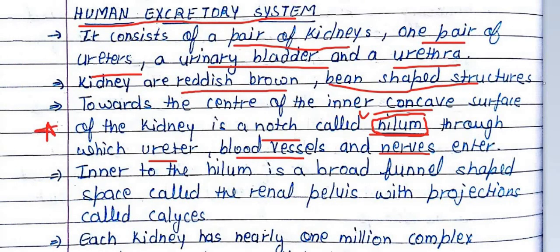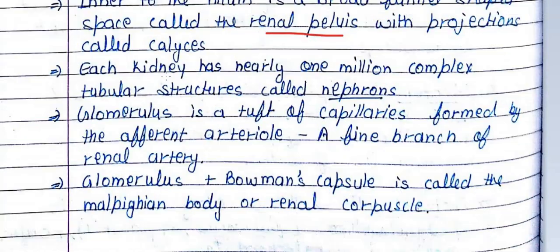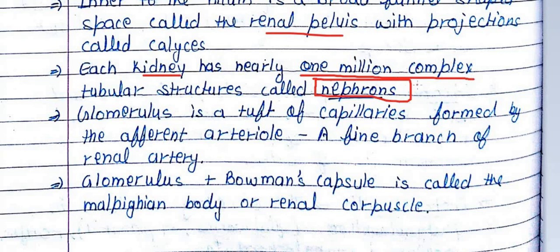The hilum is a very important structure — remember this for exams: after which surface is the hilum found? After the concave surface. Inside is called the renal pelvis. The functional unit of the kidney is called the nephron. In one kidney, there are nearly 1 million complex tubular structures called nephrons.